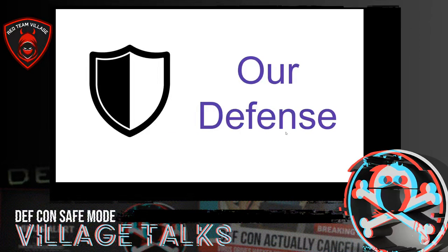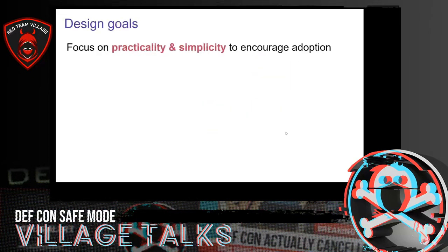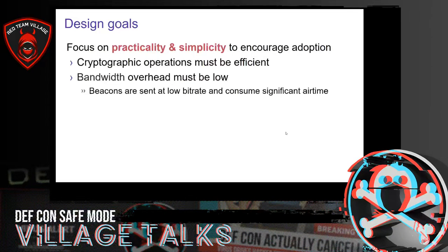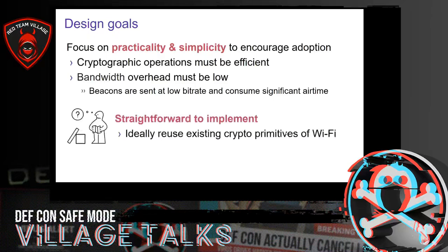So how can we prevent these attacks in practice? The idea is to authenticate beacons such that an adversary can no longer spoof them. The goal of our defense is to come up with a practical and simple design to encourage adoption in practice. This means cryptographic operations must be efficient and bandwidth overhead must be low, because beacons are sent at a low bitrate and even adding a few bytes will consume significantly higher airtime. We also want the defense to be straightforward to implement, ideally by reusing existing cryptographic primitives already used in Wi-Fi.